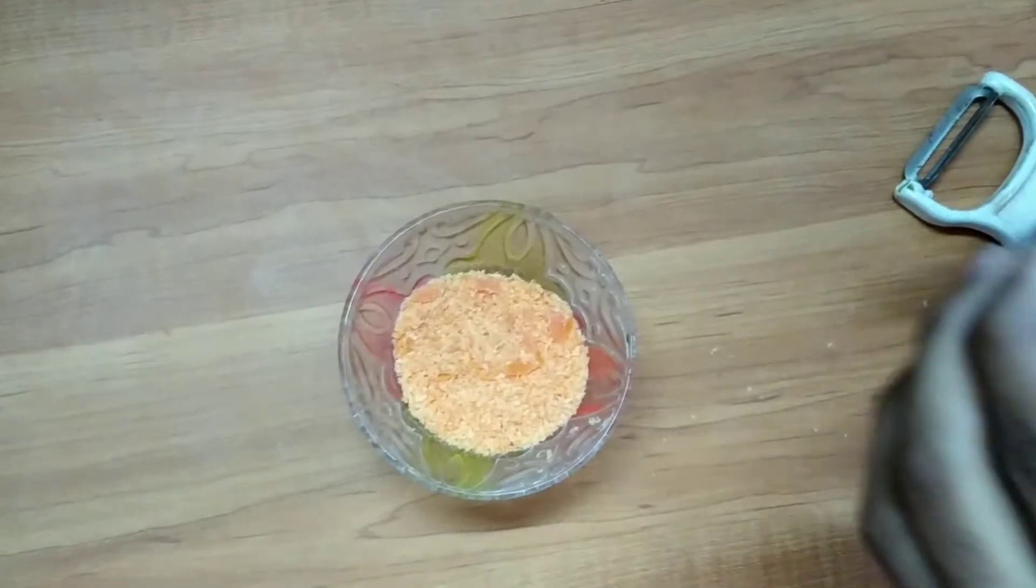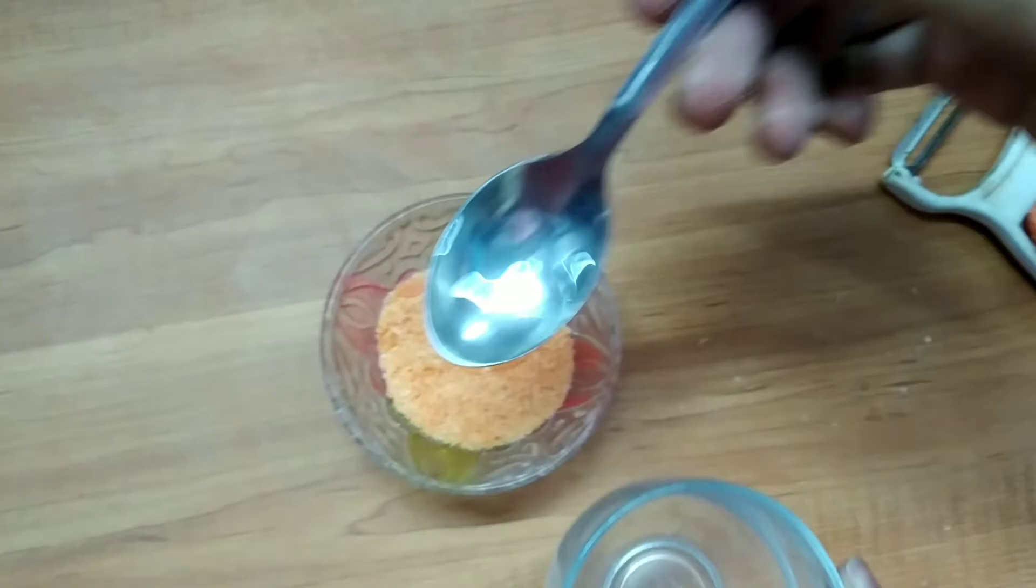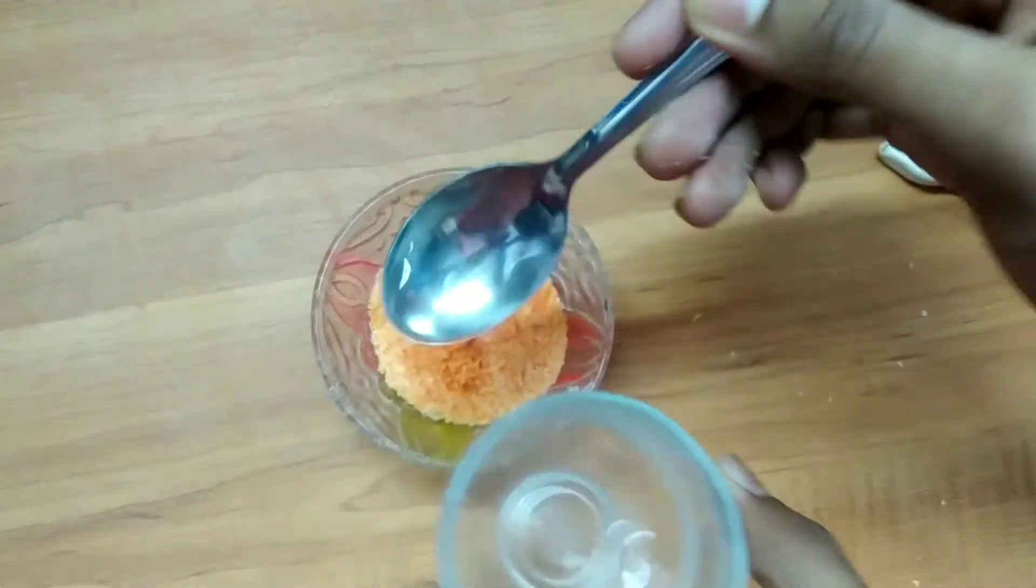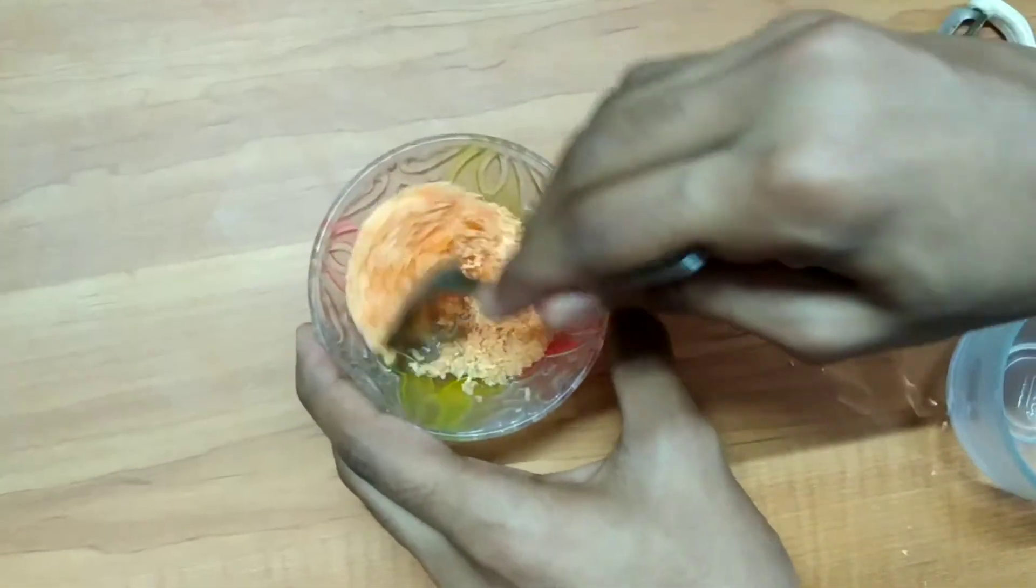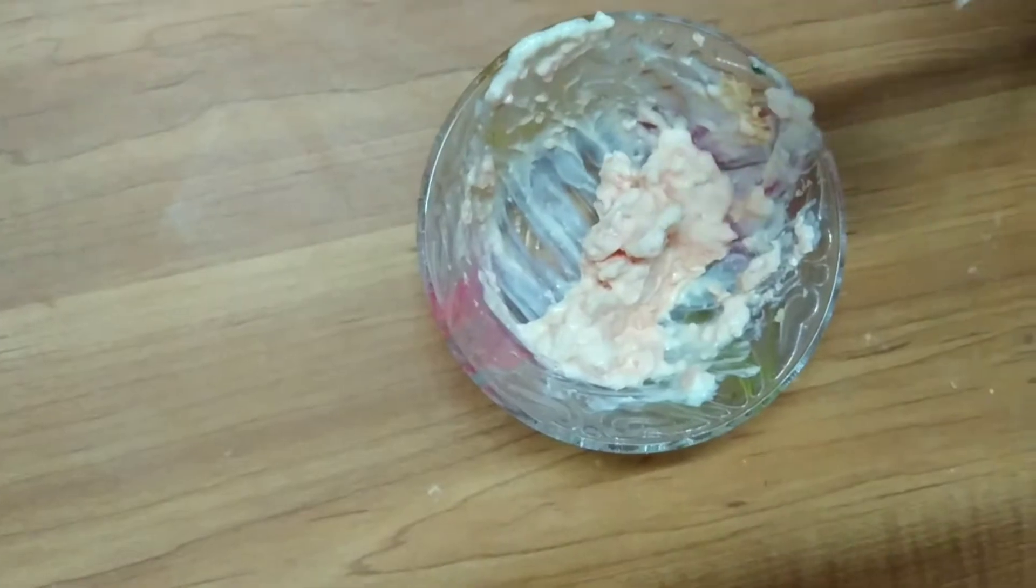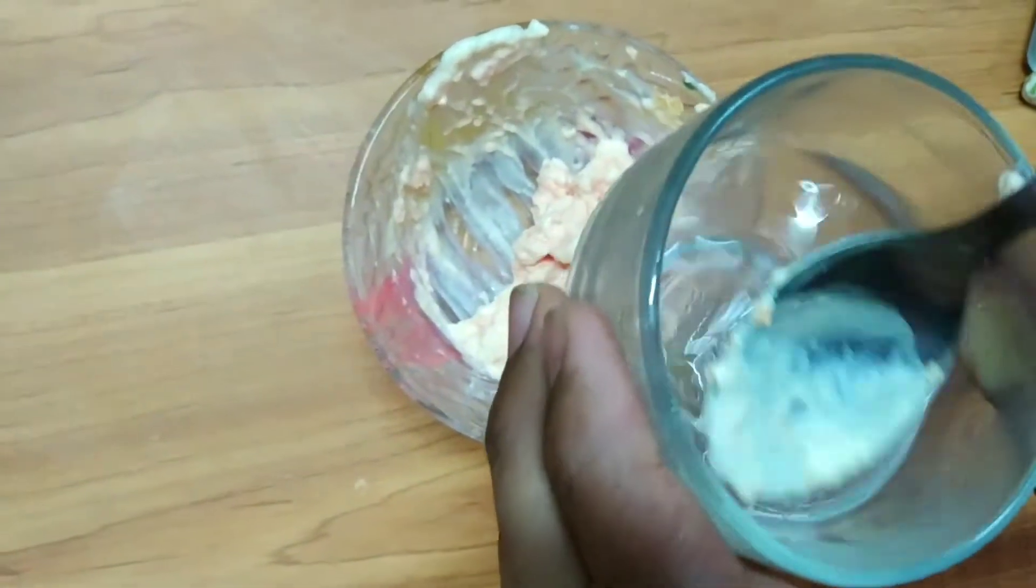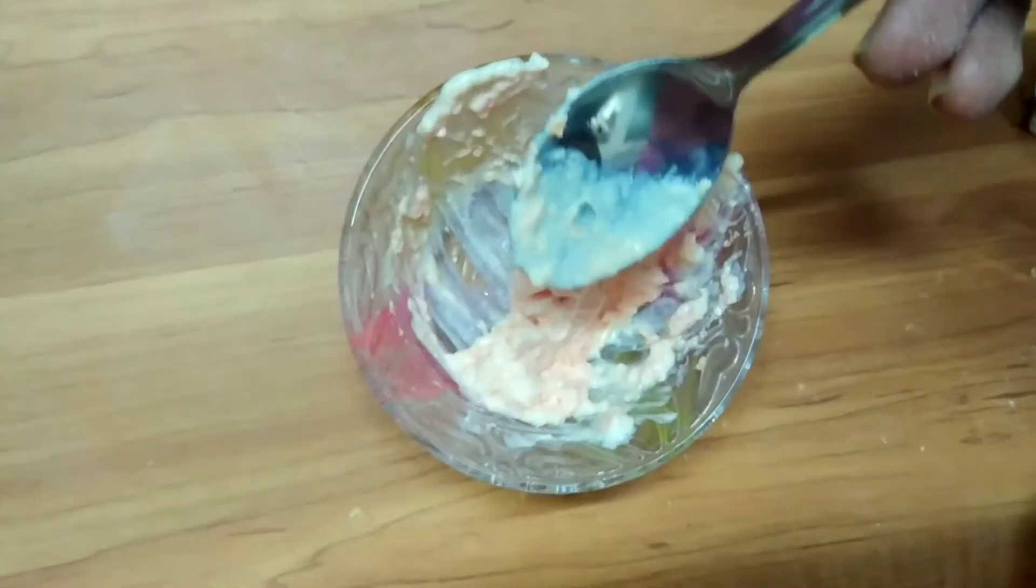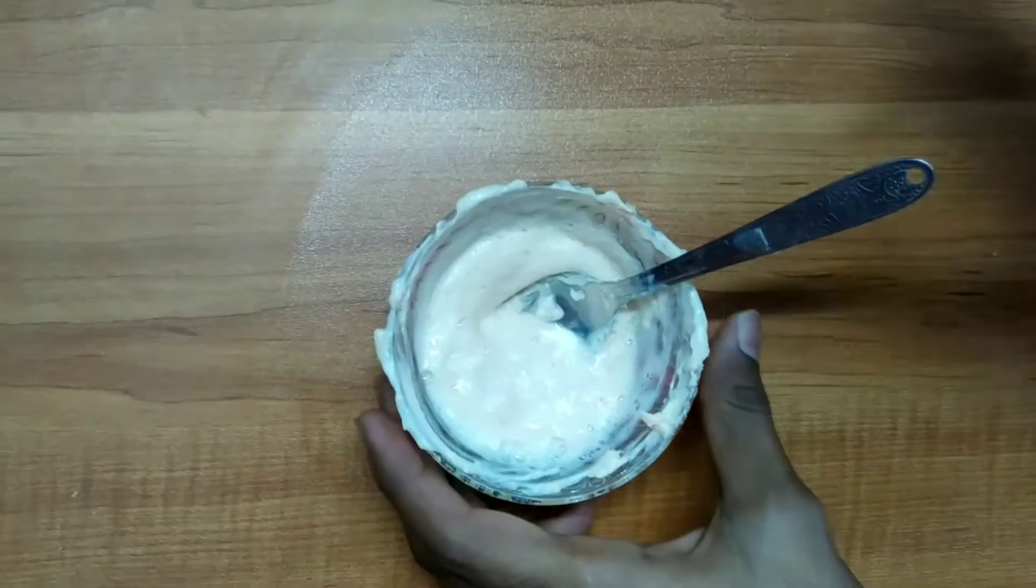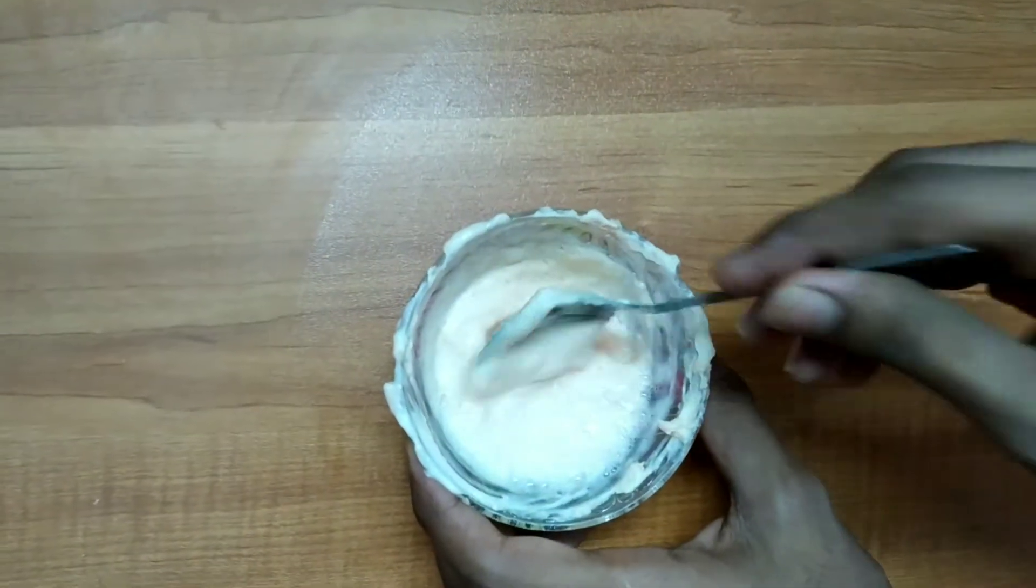Now into this soap powder, add some lukewarm water and let the soap dissolve. Add water as required and make it into a smooth paste like this. Lukewarm water or hot water helps in easy dissolving of soap.